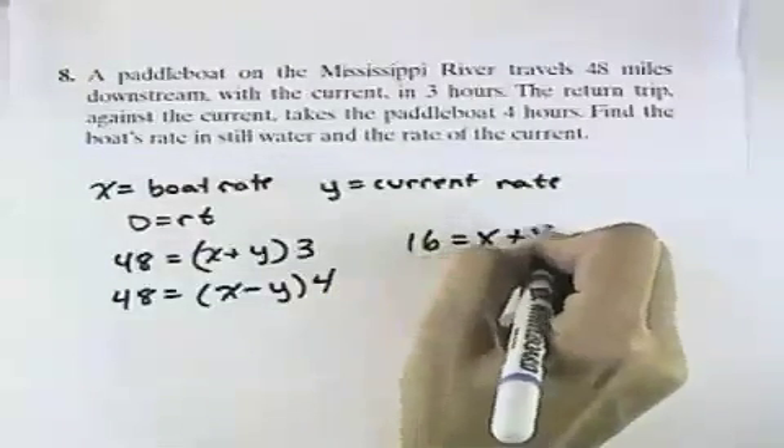I could divide both sides by 3 in the first equation so that I get 16 equals x plus y, and in the second equation I could divide by the 4 to get 12 equals x minus y. So that I can use the addition method to eliminate my y's, and I'll see that 28 equals 2x, and dividing by 2 I get 14 equals x.